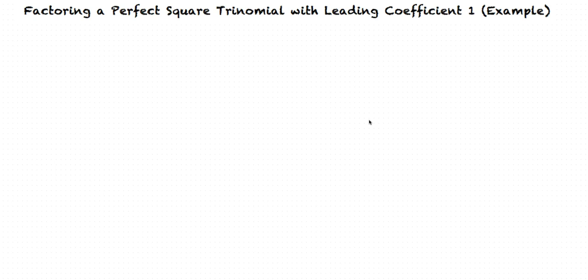This is an example video for factoring a perfect square trinomial with leading coefficient 1. In this topic, we see perfect square polynomials where our leading coefficient is 1. We can factor these using the same method we used to factor quadratic expressions with leading coefficients of 1. Later on, we will see what makes a perfect square polynomial special.